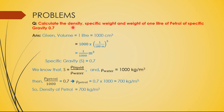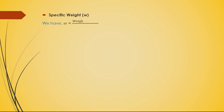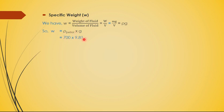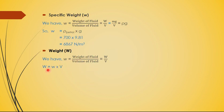With density of petrol found as 700 kg/m³, we now find specific weight. The formula is w = ρg = 700 × 9.81 = 6867 N/m³. To find the weight of the petrol, use: weight = specific weight × volume = 6867 × (1/1000) = 6.867 Newton.